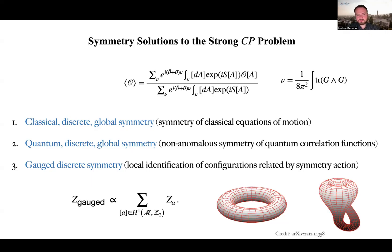If theta plus theta bar is zero or pi, we may consider a third option, which is that of a gauge discrete symmetry, a local identification of configurations related by the symmetry action. In this case, the partition function, as we argue, corresponds to a sum over all background fields, modulo parity gauge transformations that correspond to continuous deformations of the parity domain walls that we may insert.